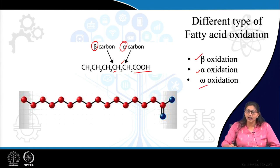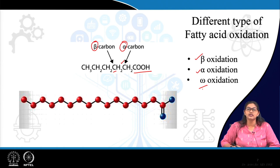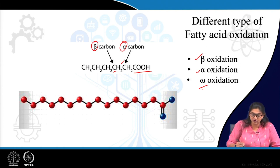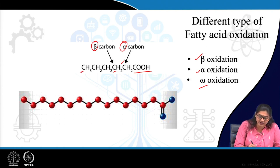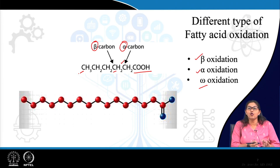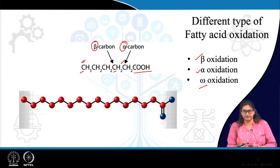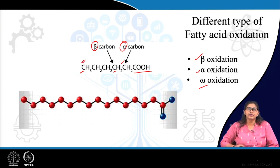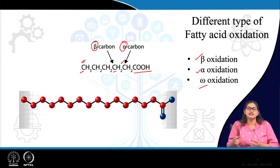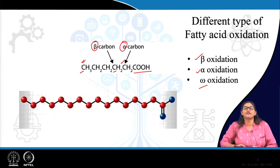Omega carbon is the farthest carbon from the carboxyl group. In omega oxidation, this terminal carbon is oxidized. Based on which carbon is oxidized, there is naming of the types of fatty acid oxidation: beta, alpha, and omega. The most common type in our body is beta oxidation of fatty acid.